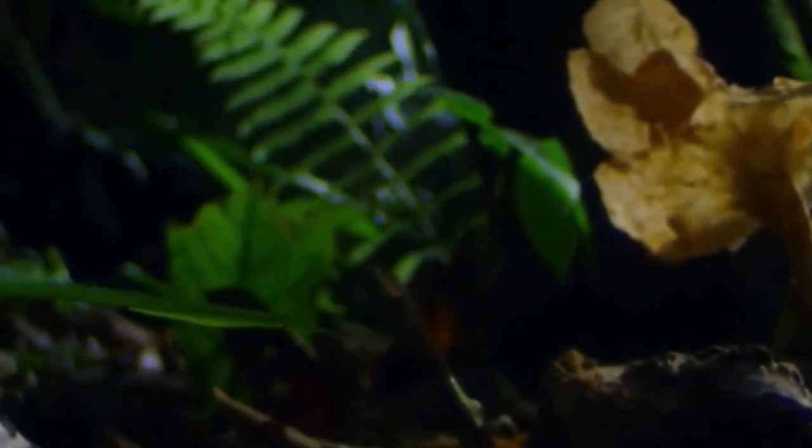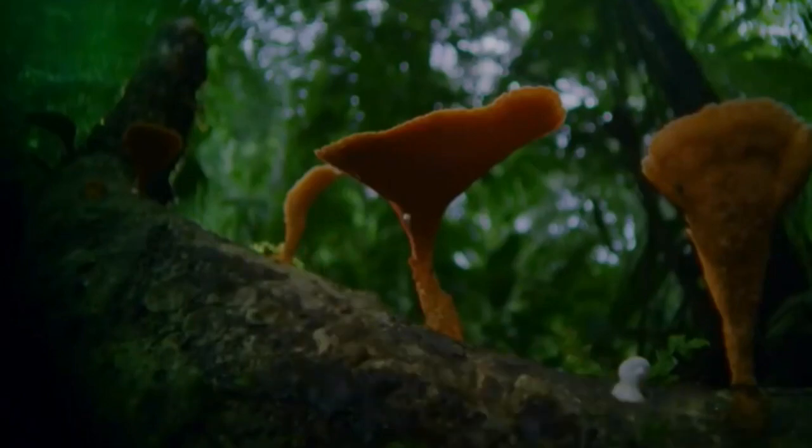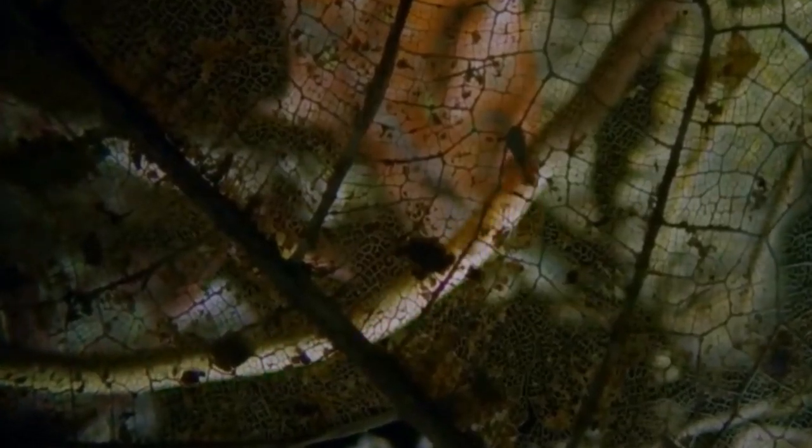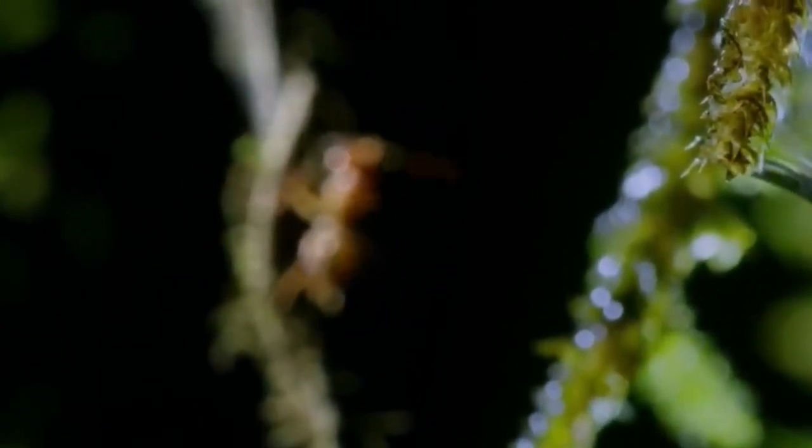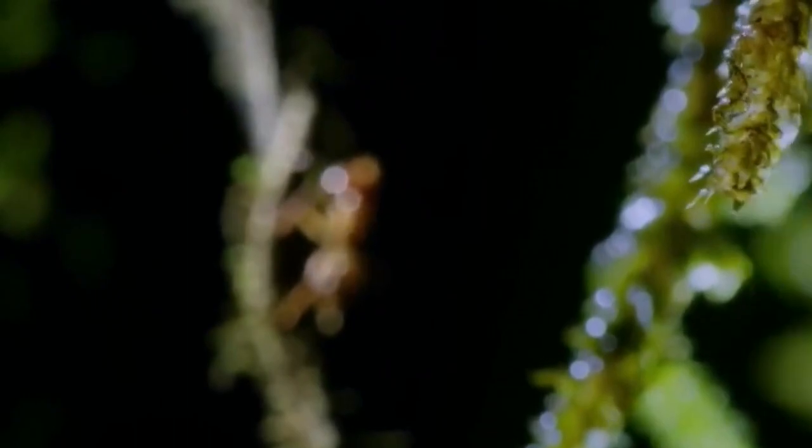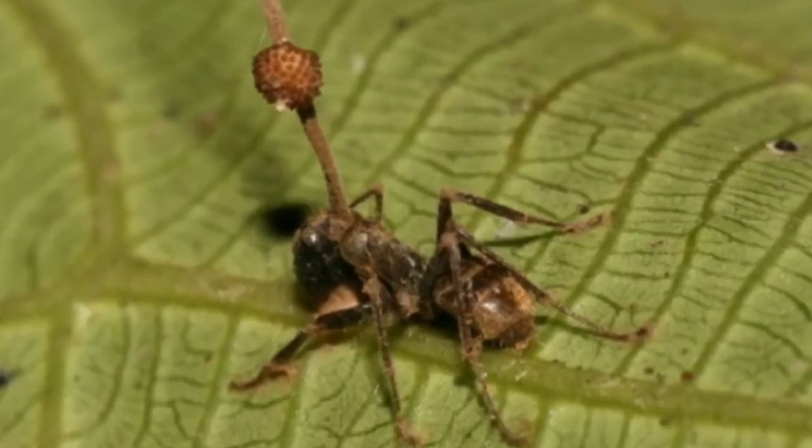Cordyceps is finding a place near the colony with the right amount of light and humidity needed for its growth and reproduction. The ant is now its puppet. Cordyceps will at last find a place with the rightful condition for its growth. To ensure death of the ant and to take nutrients from its whole body, it will force the ant to strike its head into a leaf. Soon the ant dies.